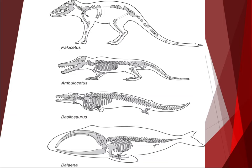Pakicetus is thought to be the ancient land-dwelling ancestor of the whales. It was a carnivorous but semi-aquatic quadruped — meaning it has four legs — that would live in shallow freshwater habitats. It didn't look much like a whale, but its skull resembles those of modern whales. Specifically, the ear region is surrounded by thick bone, a characteristic found only in whales today. This minor detail has helped paleontologists connect together a series of fossils that are part of the whale evolutionary tree.